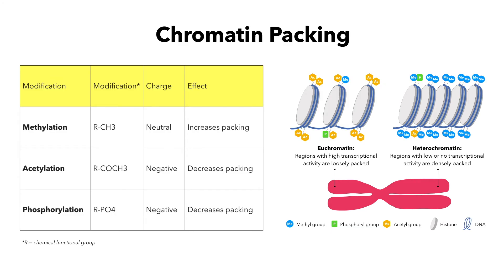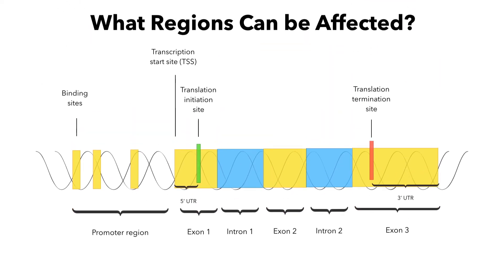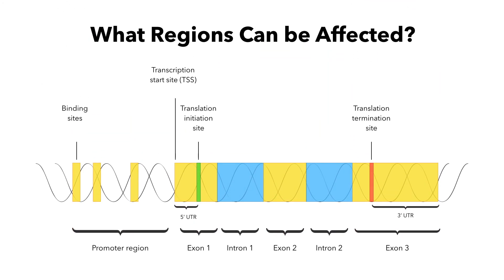Histone modifications can function either individually or combinatorially to govern such processes as transcription, replication, DNA repair, and apoptosis. Methyl groups of atoms increase packing and acetyl groups decrease packing. Also, phosphoryl groups can be attached to the histones and cause a decrease in packing. As the DNA is wrapped around the histones and can be more or less accessible, various positions of the DNA are affected. These include the promoter region, transcription start sites, and the introns and exons of genes, each having a significant effect on gene expression, alternative splicing, and other downstream regulation of pathways.